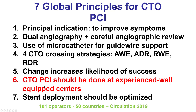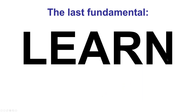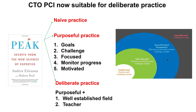The last global guiding principle is that CTO-PCI should be performed at experienced, well-equipped centers. If you are not there yet, that does not mean you cannot get there — education is critical for moving from less to more experienced status. Learning can be achieved by watching cases, reading, and participating in webinars, but the most important method is performing cases through deliberate practice. CTO-PCI is well-suited for this because we now have established algorithms, well-defined crossing techniques, and many excellent operators and teachers who can help people improve their skills safely.